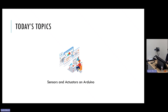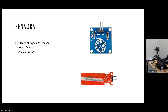Today we're going to be covering sensors and actuators and how to use them with the Arduino boards. We have different types of sensors — binary sensors as well as analog sensors. One of the sensors that you have, which is an example of a binary sensor, is this touch sensor.